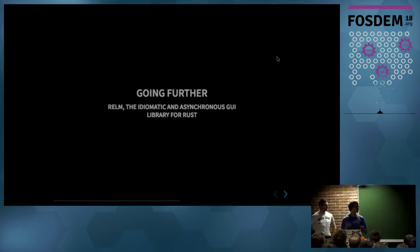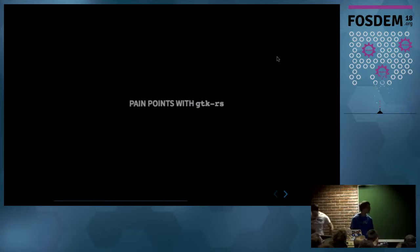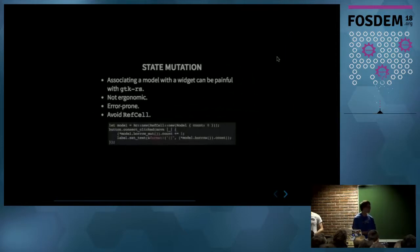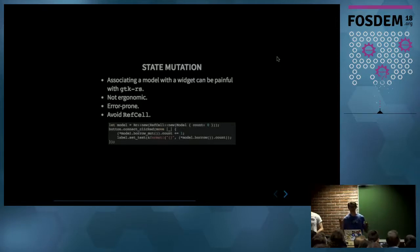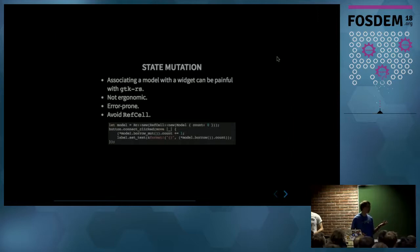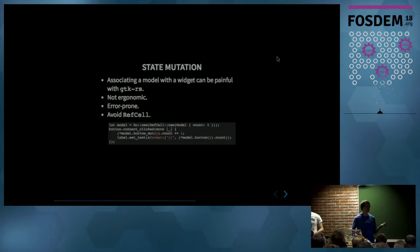As Guillaume said, Relm is an abstraction over GTK-RS, which provides a more idiomatic way to create desktop applications in Rust. It is based on GTK-RS and also provides some support for asynchronous programming. The first problem I had when working with GTK-RS by developing a web browser is when you want to associate some data with a widget — say the model of your application. Because of the safety rules in Rust, you need to use an RC RefCell, and then borrow_mut when you want to update the model in a signal.